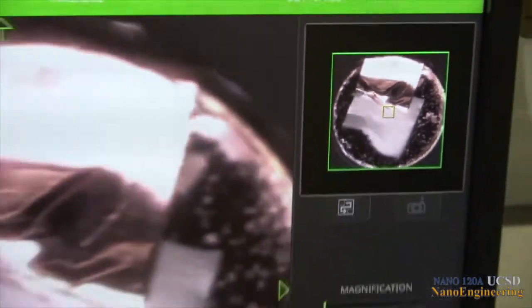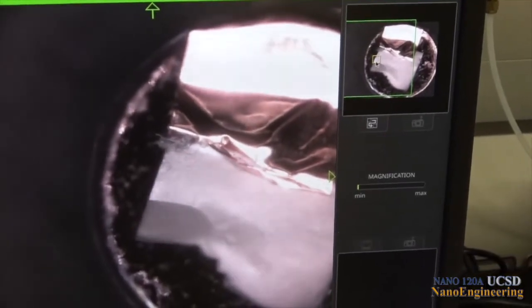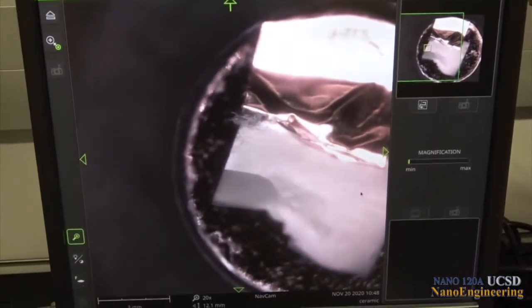Movement of the sample is controlled by clicking on the portion of the sample you want to move to the center of your viewing screen. The box in the upper right image shows the region you choose to view.